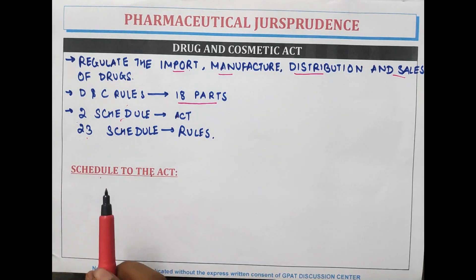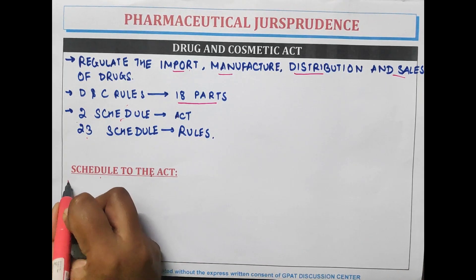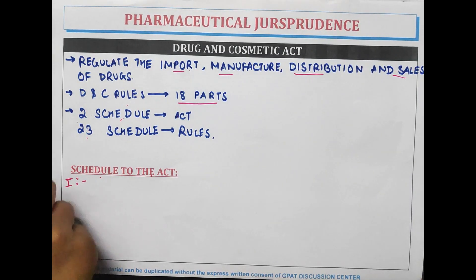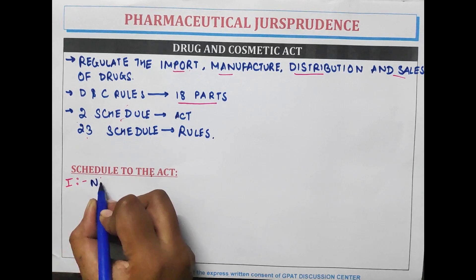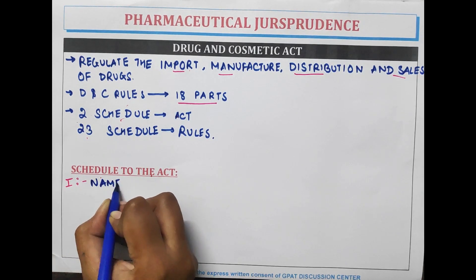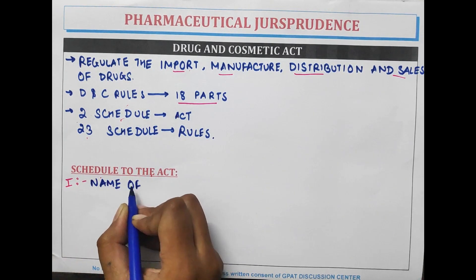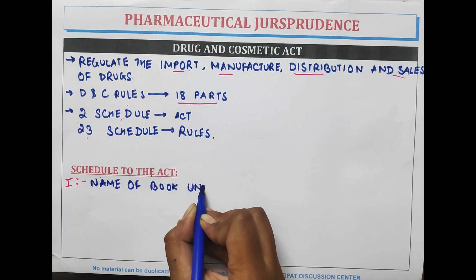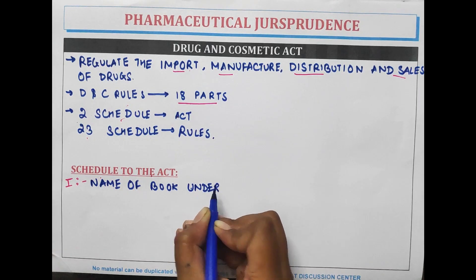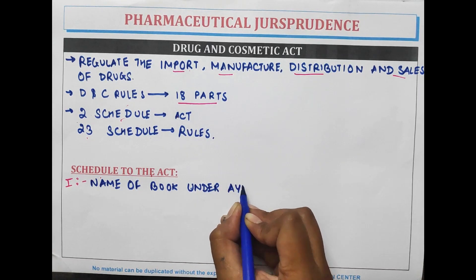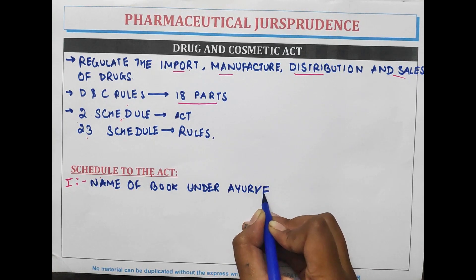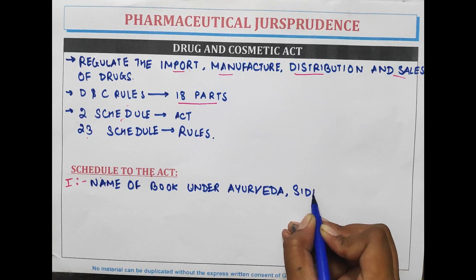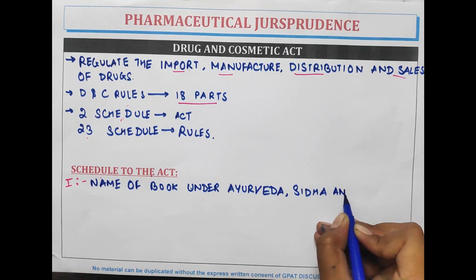There are two schedules for the act. Schedule number one contains names of books under the Ayurveda, Siddha, and Unani systems.